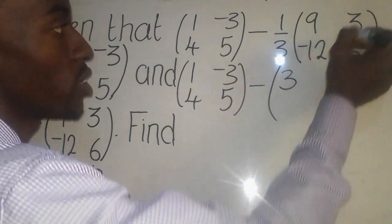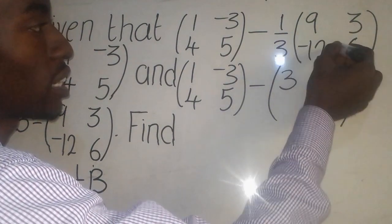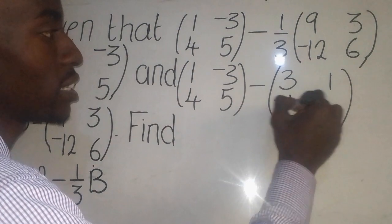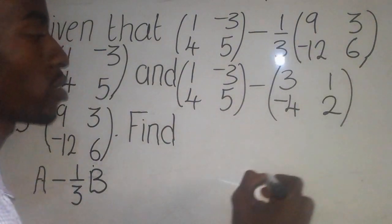1 over 3 times 3, it's going to give me 1 there, like this. 1 over 3 times negative 4, it's going to give me negative 4. 1 over 3 times 6, it's going to give me 2 there.